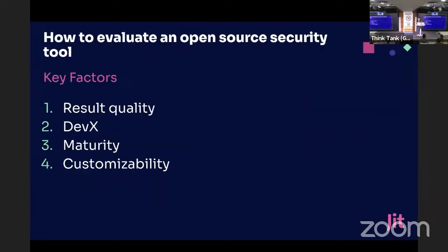So how do we evaluate an open source tool? We need one set of key metrics to measure by — no matter the tool, no matter the category. We identified the most important factors. Results quality, for developers, reigns supreme. It's got to be good first and foremost — you should prioritize this above everything else.